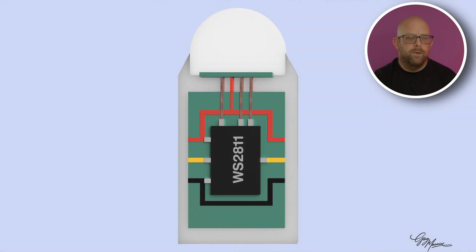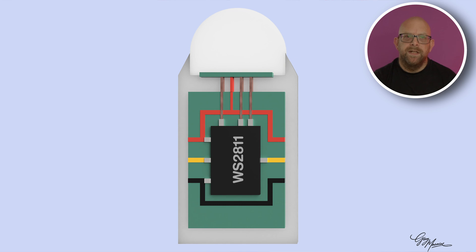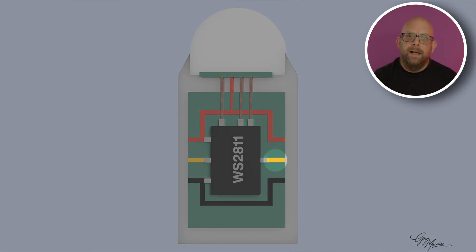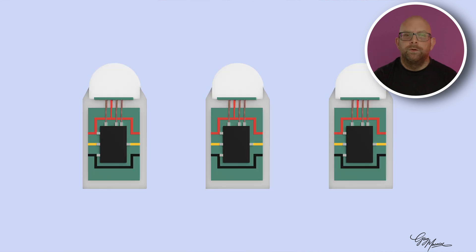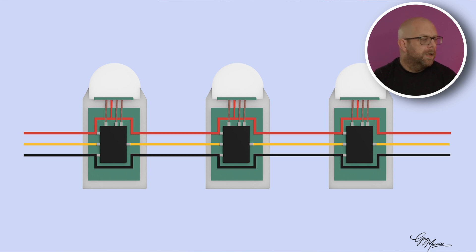Now the power comes in through the red cable, goes round the PCB and comes straight out again to the next pixel. The same with ground, but the data flows into the IC where it's processed. The data that's going to be used by the LED in that pixel is stripped off the front of the data string, and the remainder of the data string is then sent out from the pixel to the next one in the chain. So if we get a small chain of pixels and hook them up, we get power coming in round the PCB, out to the next one and so on. Data comes into the first chip, out to the next one and so on.